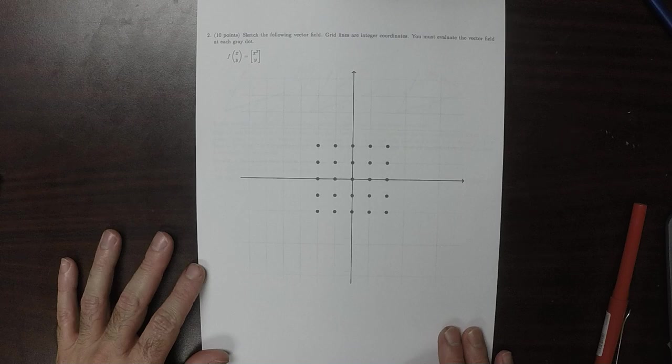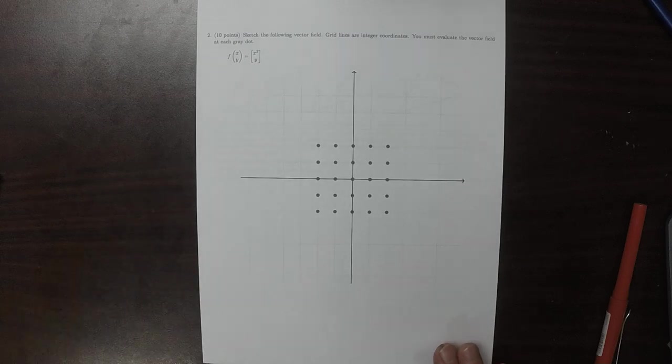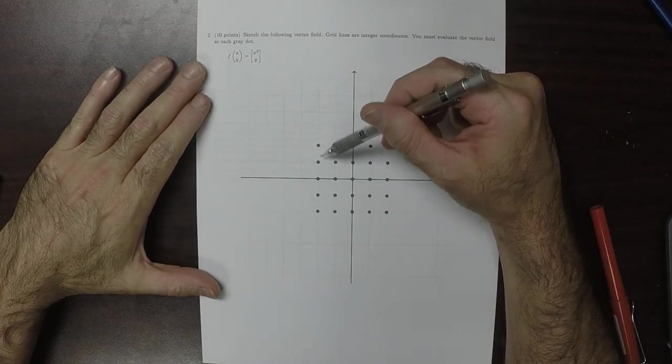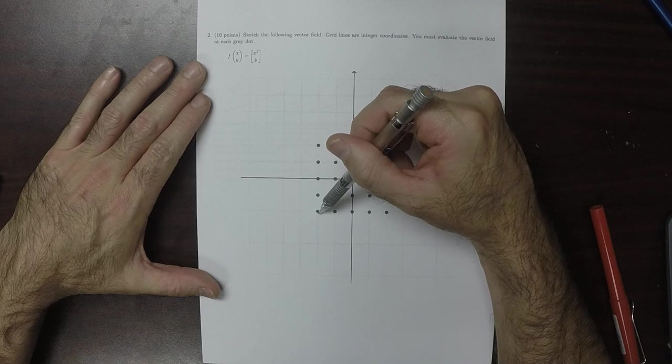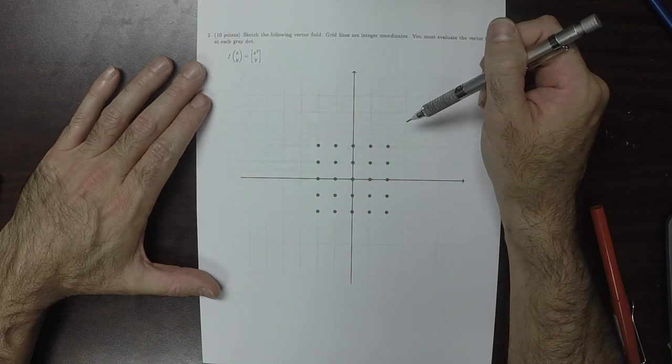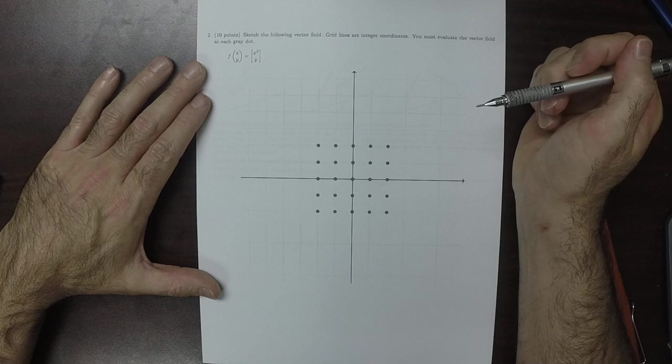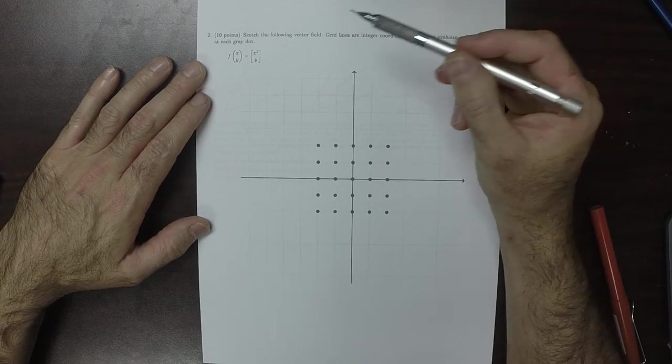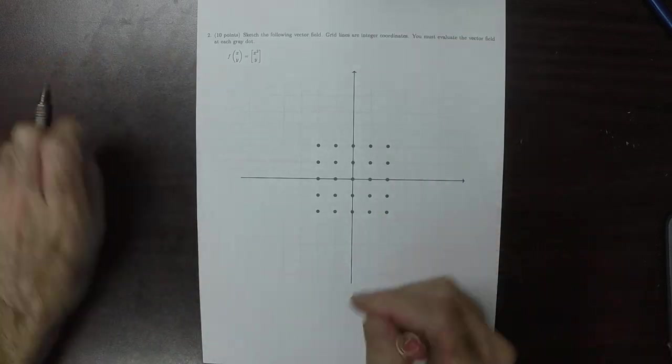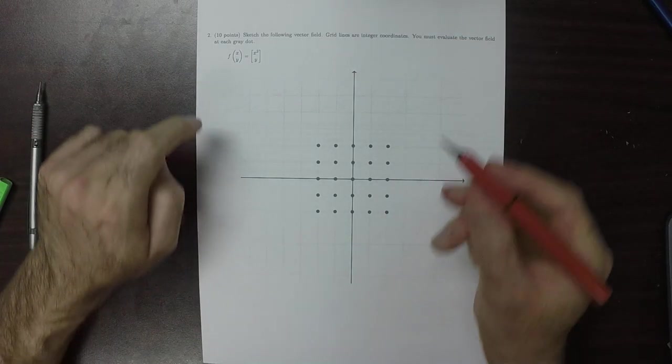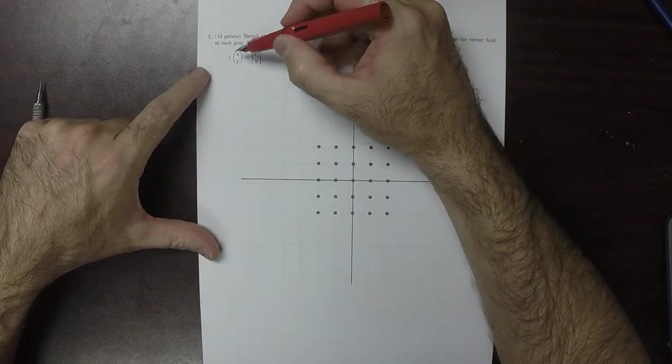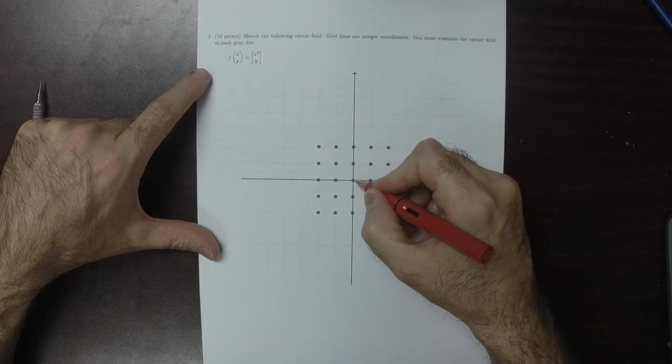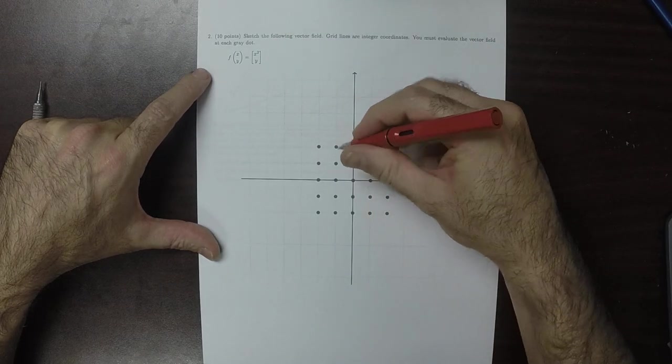Oh lovely, okay. So we've got points from x's and y's are negative 2 all the way up to x's and y's are positive 2. So let's see if I can get some of the easy ones first. So I'll do all the ones with zeros. So anytime that x is zero, it's pretty easy.